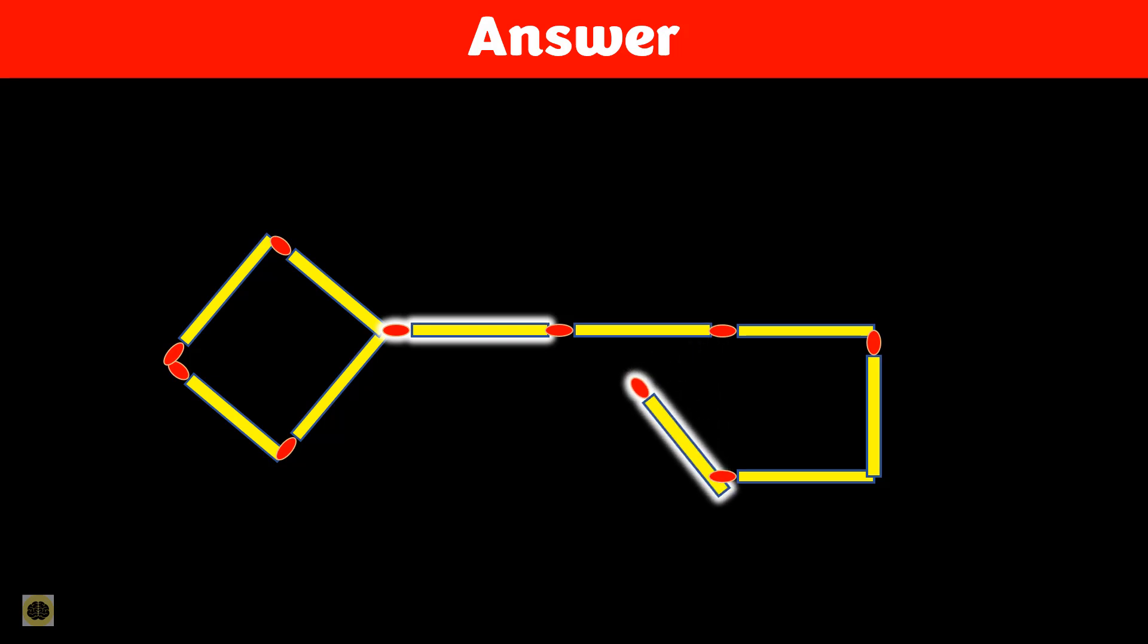For the first move, take the vertical matchstick shown on the right side. Move this stick downward and place it horizontally. This becomes the base of the new rectangle. By placing it across the structure, you divide the space and create the lower boundary of the second rectangular shape.